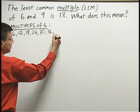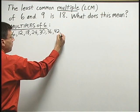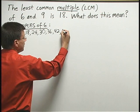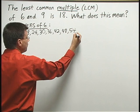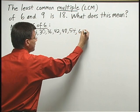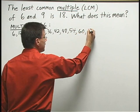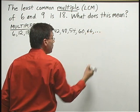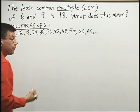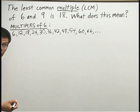7 times 6 is 42. 8 times 6 is 48. 9 times 6 is 54. 10 times 6 is 60. 11 times 6 is 66. OK, I'll stop. They keep going. I've listed quite a few of them, but they actually go on and on forever.